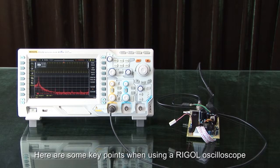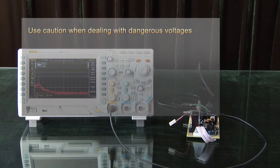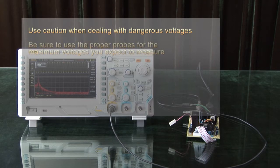Here are some key points when using a Rigol oscilloscope to measure AC voltages. Use caution when dealing with dangerous voltage. Be sure to use the proper probes for the maximum voltages you expect to measure.